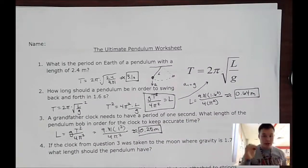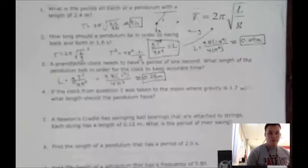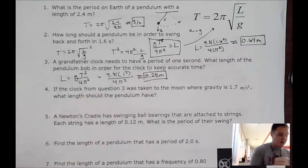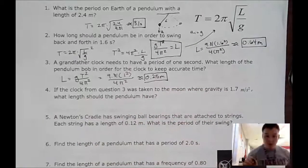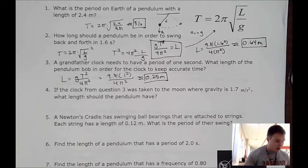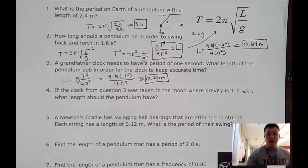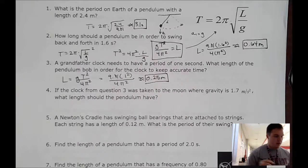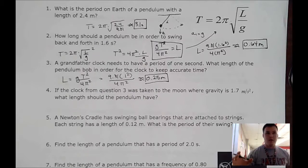Number four. If the clock from question three was taken to the moon where gravity is 1.7 meters per second squared, what length should the pendulum have? So now we're going to an area where it's a different acceleration of gravity. So now it's not 9.81, it's 1.7.